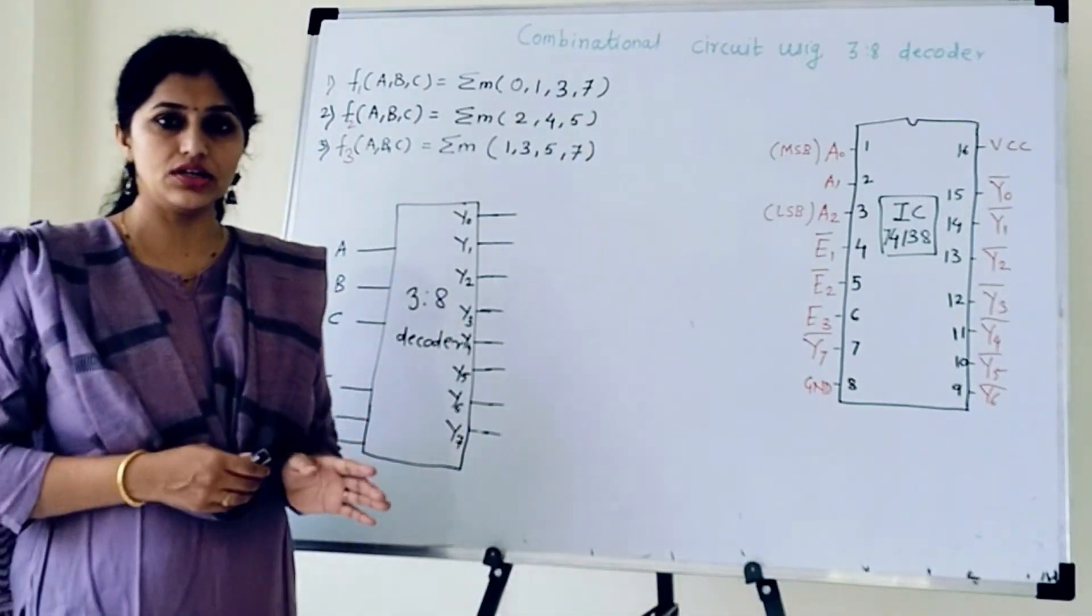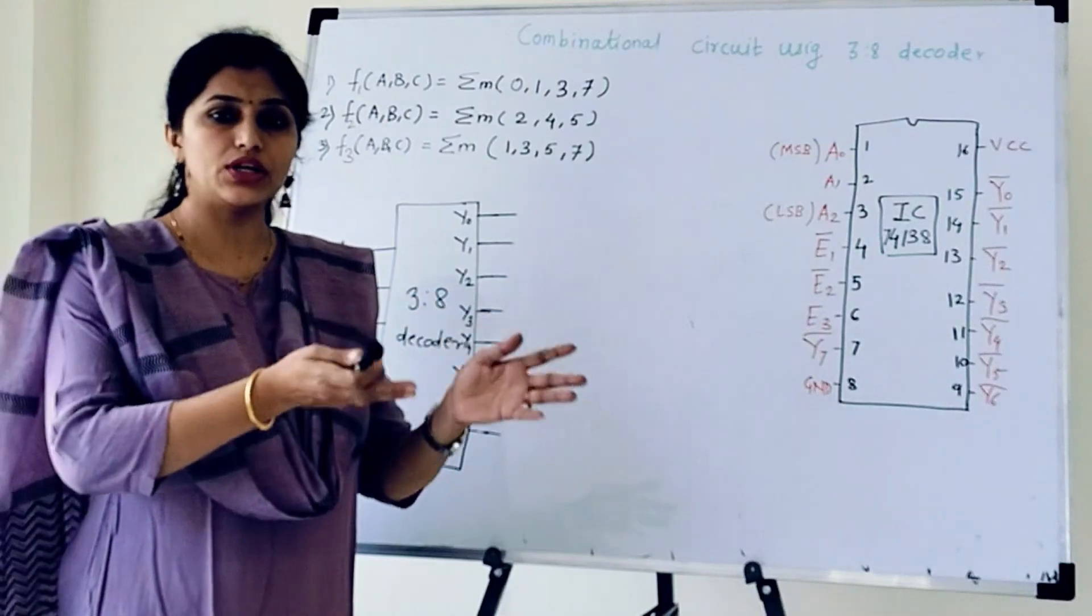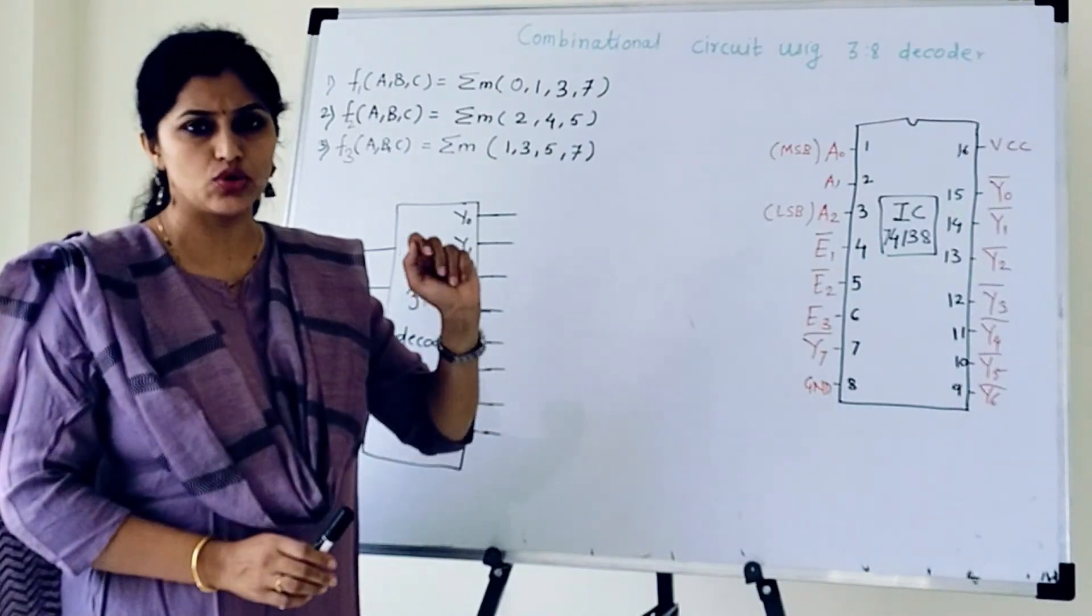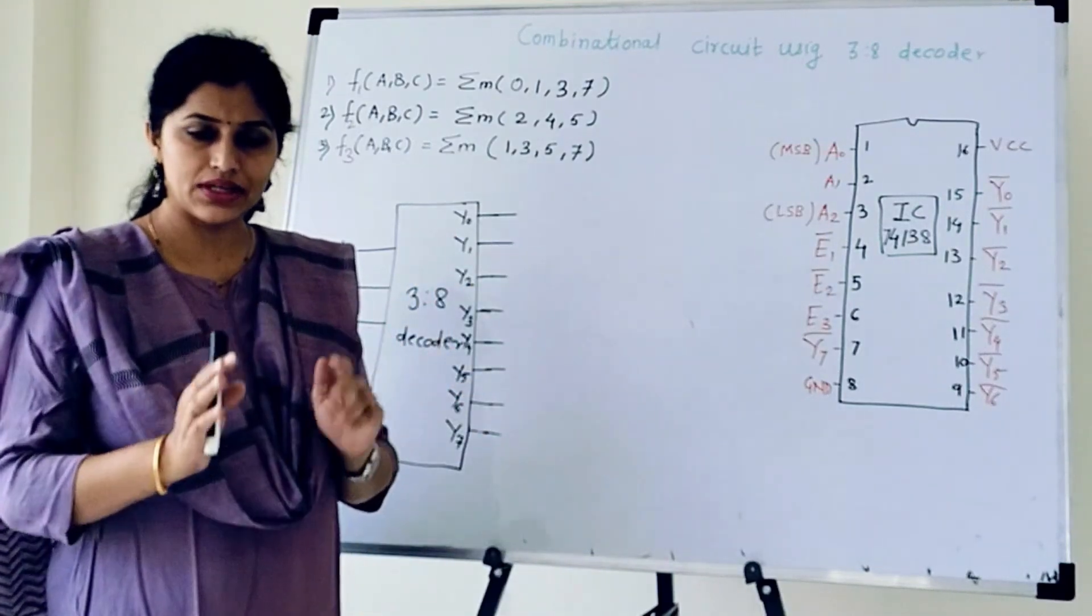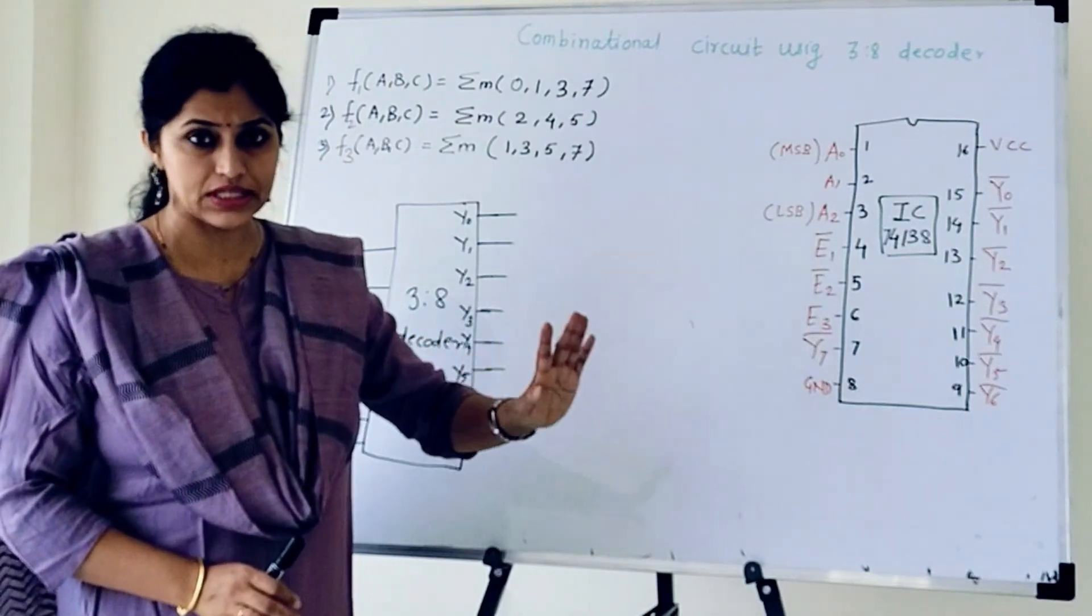So decoder is a circuit which decodes digital input into particular output and decoders are mostly used in memory addressing. They are also used in 7 segment displays.